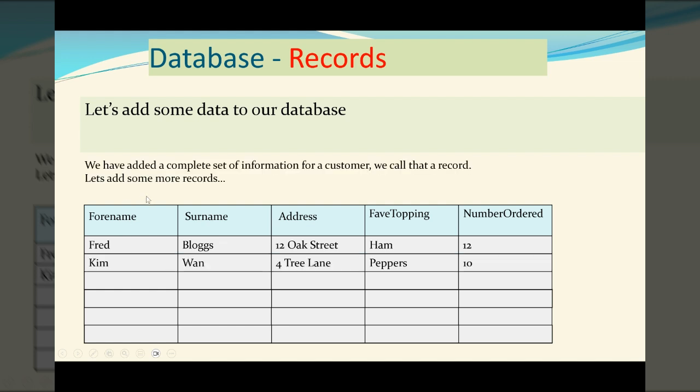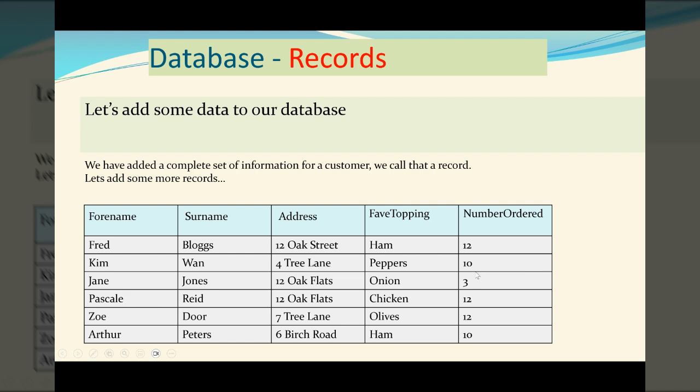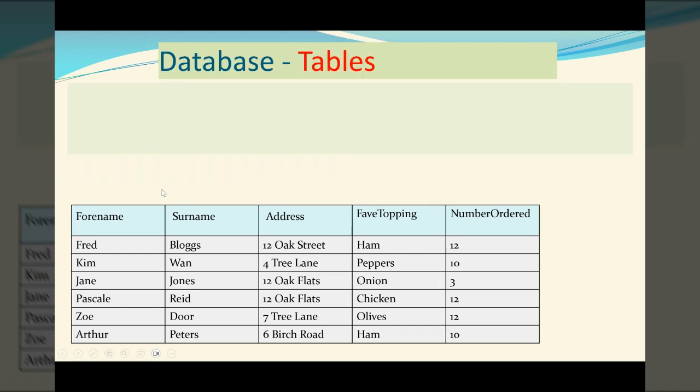Let's add some more records. So here we have Kim Wan, four tree lane, favorite topping peppers, number ordered 10. Let's add another record, and another record, and another record, and another record. So we now have six complete sets of data or six records.